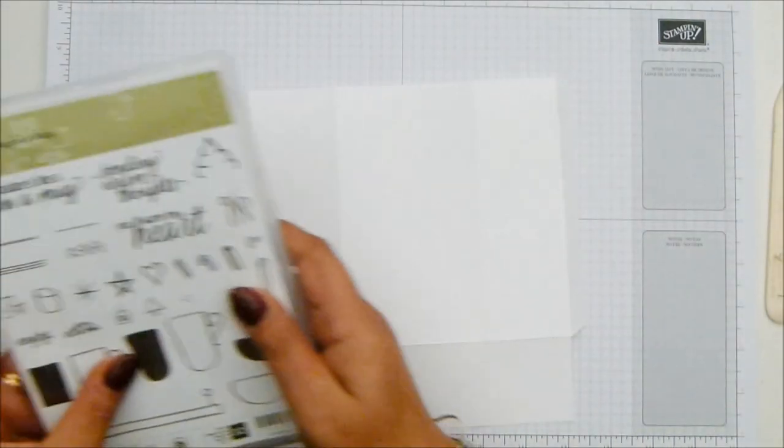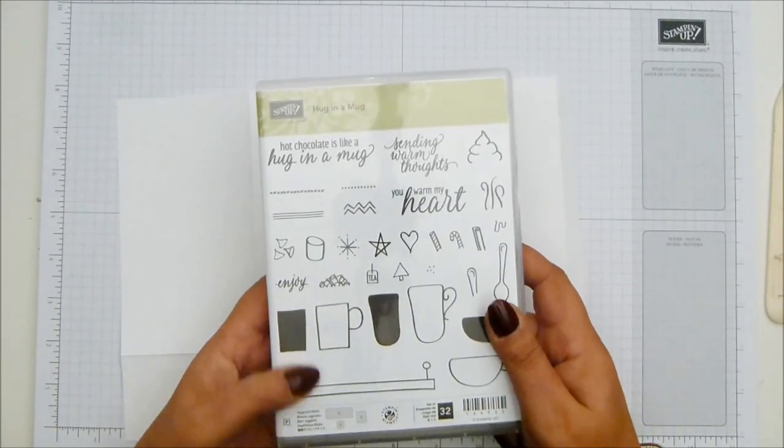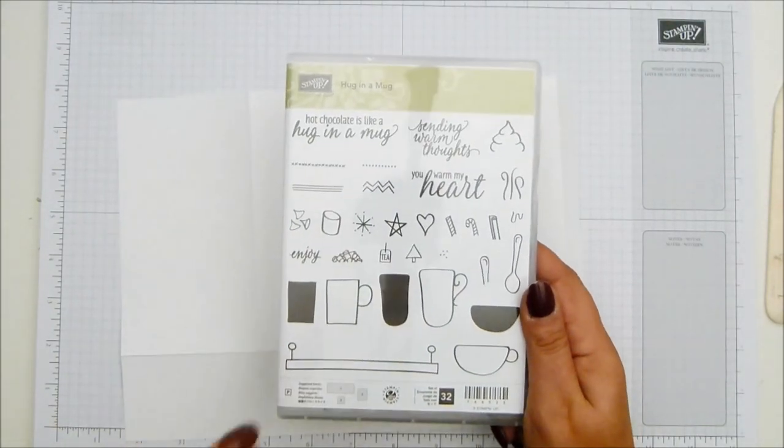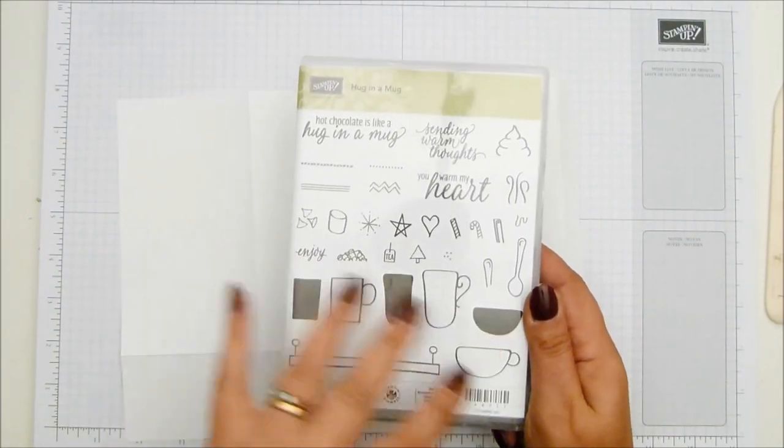So that's going to be where my glue goes. So that's the seam and I want that at the back. So that means this is the panel that I want to stamp on. So the wider one. So I have got Hug in a Mug. Love this. It's so cute. Absolutely adore it. And it's great because you've got outlines and then you've got the liquid kind of to go inside.